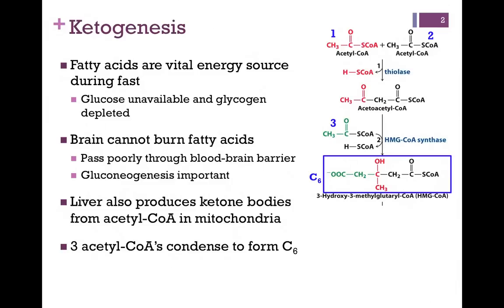Here is the beginning of the process illustrated on the far right. We're going to condense three molecules of acetyl-CoA, and they're numbered. Two are condensed in the first step to form acetoacetyl-CoA, and then one more acetyl group is added by HMG-CoA synthase, giving us 3-hydroxy-3-methylglutaryl-CoA, or for simplicity, HMG-CoA.